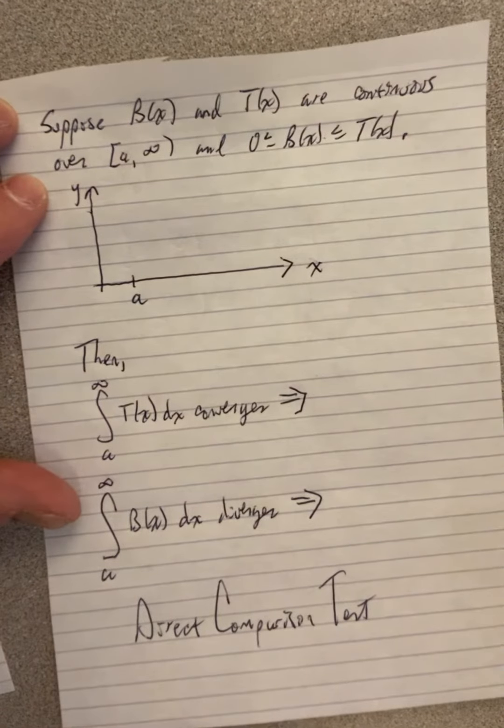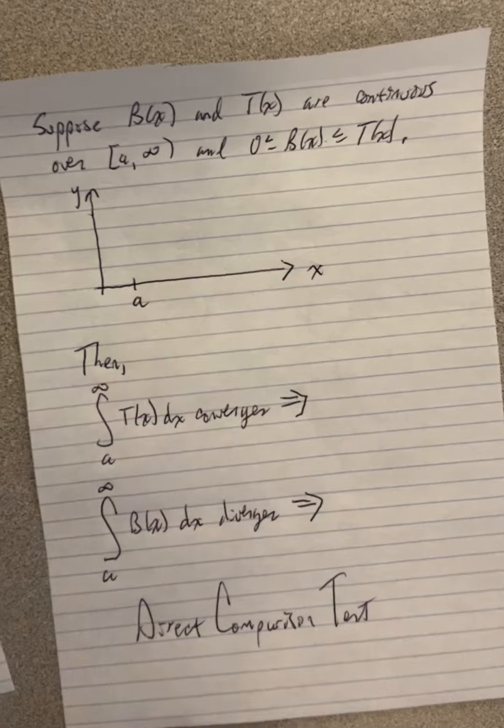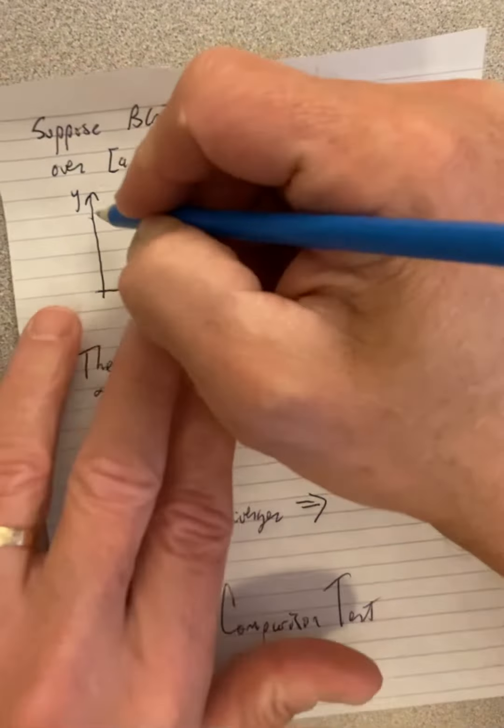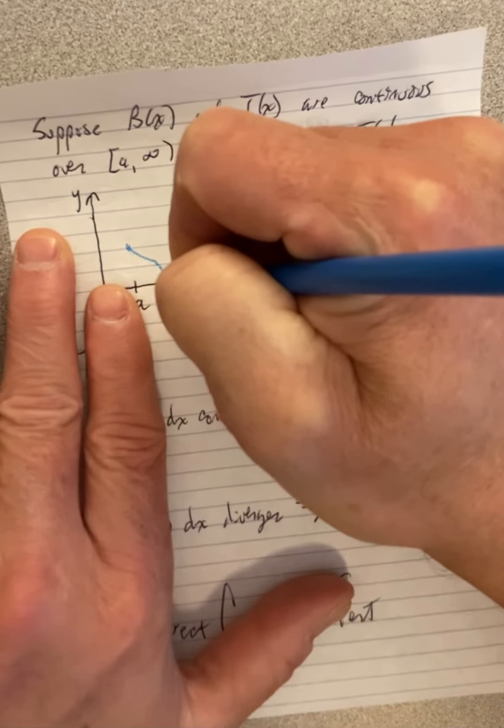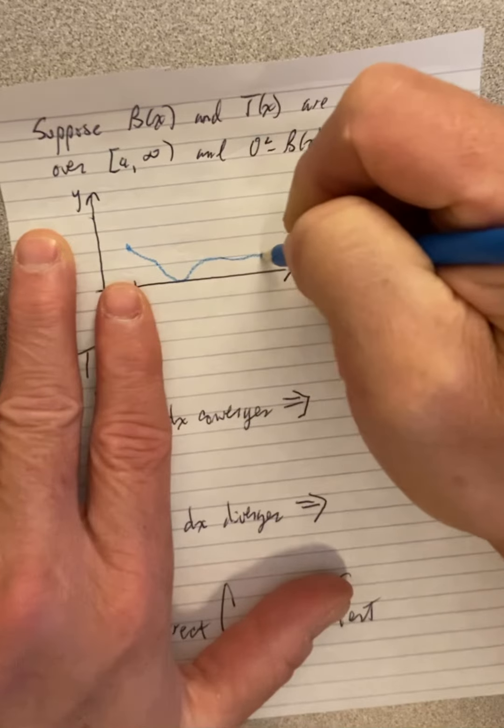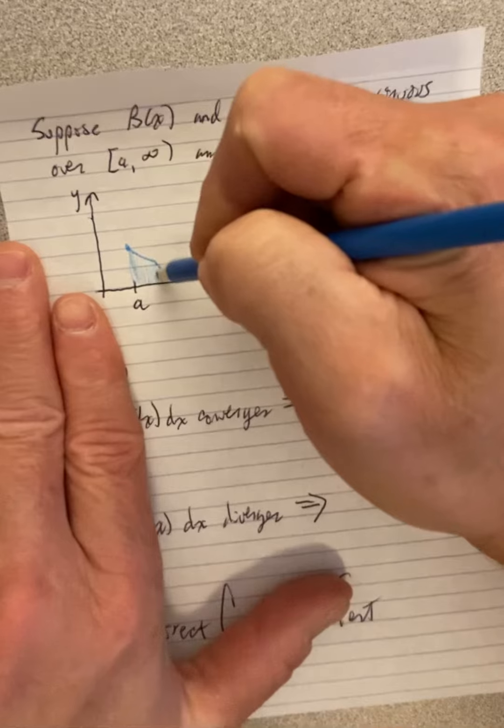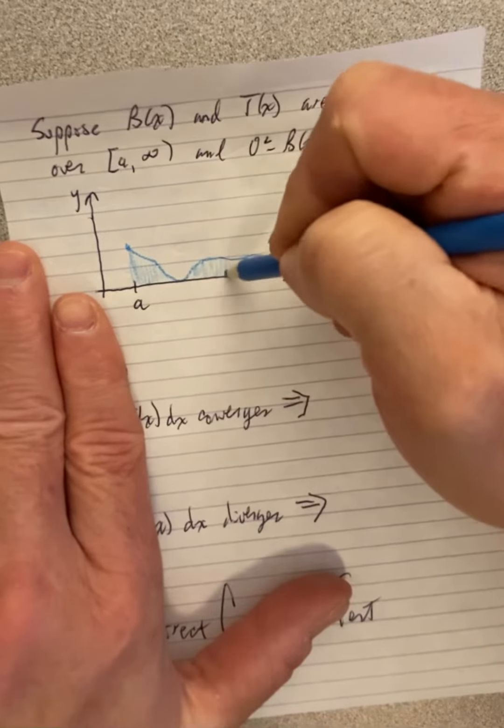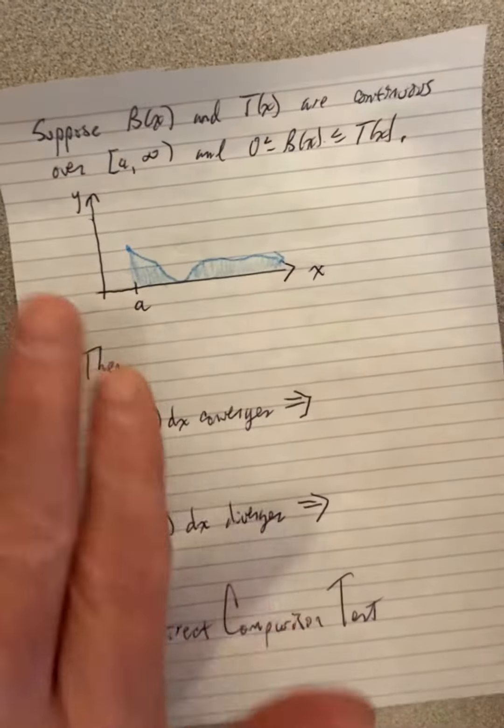So, in other words, we have two functions. One of them is B, so I'll use blue for B, and it's the bottom function. Maybe it looks like this. It dips down. It can even touch zero. It just has to be greater than or equal to zero all the time. If we were to look at the area under the curve, the integral from A to infinity.